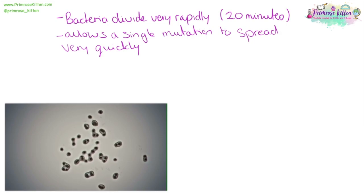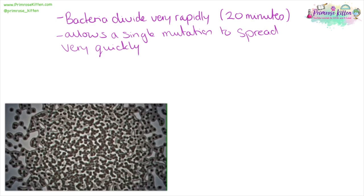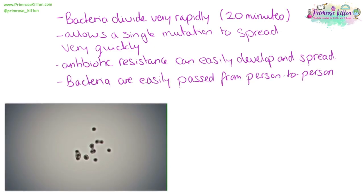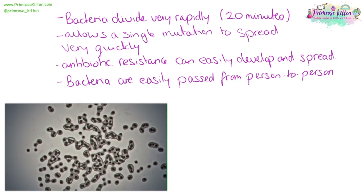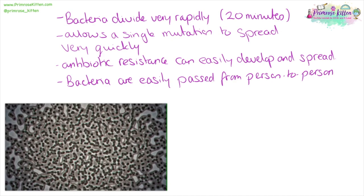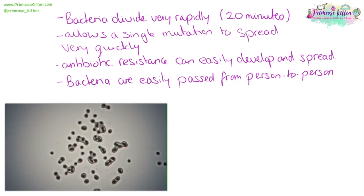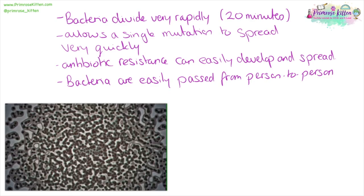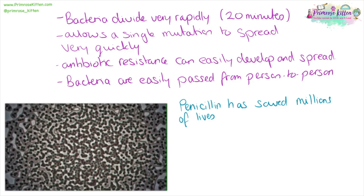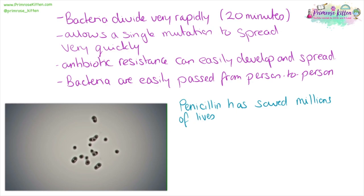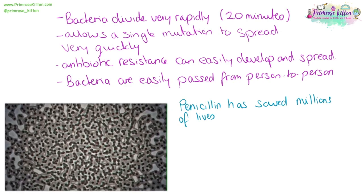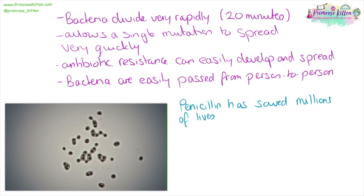Bacteria divide very rapidly — in good conditions roughly every 20 minutes. This allows a single mutation to spread through the population really quickly. This allows antibiotic resistance to easily develop and spread due to random mutations. If those random mutations mean the bacteria don't get killed by antibiotics, they'll be selected for by natural selection. Bacteria also easily pass from person to person or from animal to person, which means antibiotic-resistant bacteria spread really easily. Penicillin has saved many millions of lives — before the widespread use of antibiotics, people died of very common things, and going into hospital for a simple operation was most of the time lethal. The smallest infection could kill you.